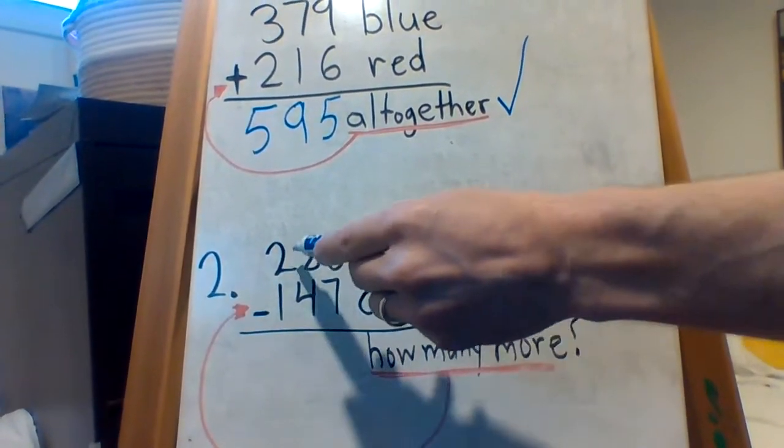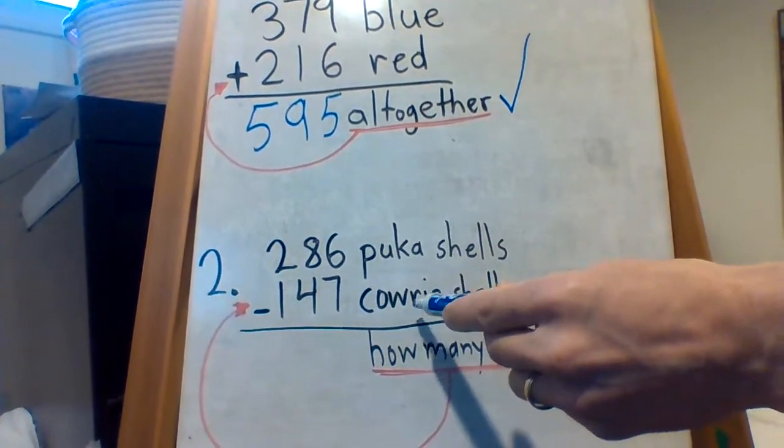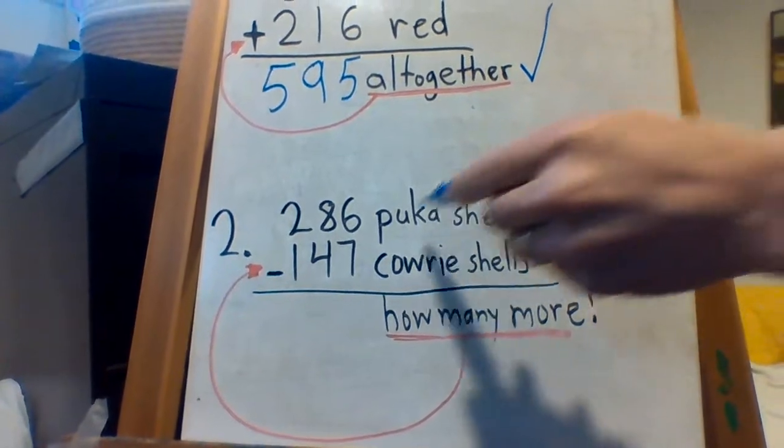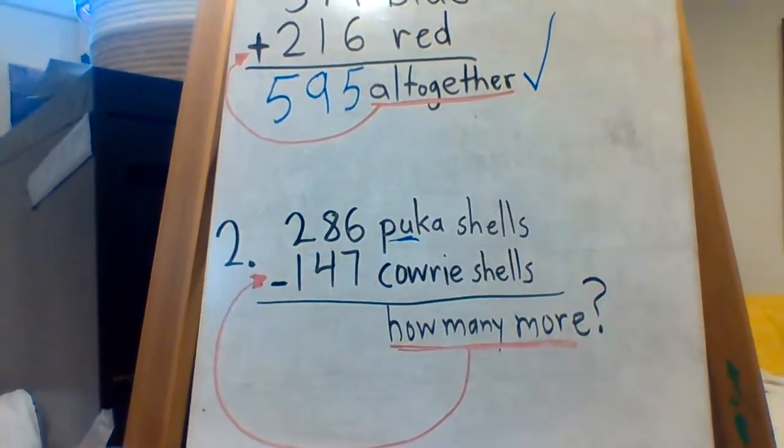so you'll notice we put subtraction there. So we have this many puka, 286. This many cowrie, 147. But what's the difference? How many more puka shells is what we want to know about.